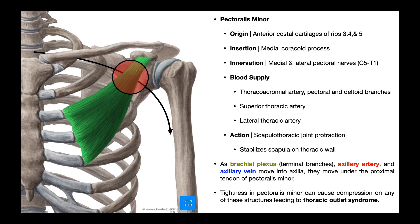There's one more thing to discuss with respect to thoracic outlet syndrome, and that's the pectoralis minor muscle. Pectoralis minor originates off the anterior costal cartilages of ribs 3, 4, and 5. It's a convergent muscle that inserts on the coracoid process of the scapula. As discussed earlier, the terminal branches of the brachial plexus, the axillary artery and axillary vein run underneath the proximal, more tendinous part of this muscle — that is the pectoralis minor space.